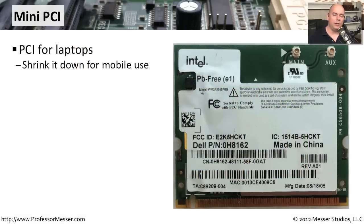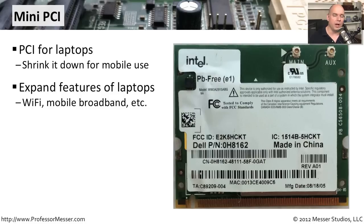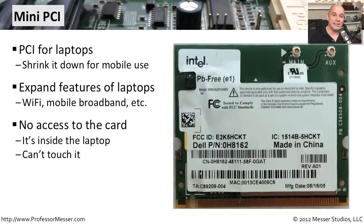As we became more mobile, we needed a way to take the same functionality as PCI and shrink it down for mobile devices. So a new standard was created called Mini PCI, with the same type of signaling and capabilities as PCI but in a very small form factor that worked perfectly for laptops. We could add a Wi-Fi card or a mobile broadband card right into the laptop itself using the same standard as PCI. Unfortunately, when you plug these into the laptops they are inside under the covers, so unlike a desktop where you could plug into a PCI adapter card's interface, these adapter cards are inside your laptop and you really don't have access once it's installed.